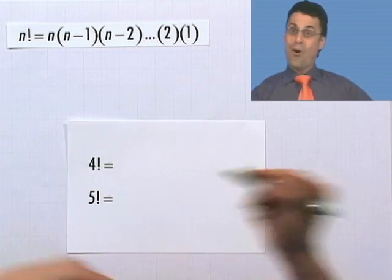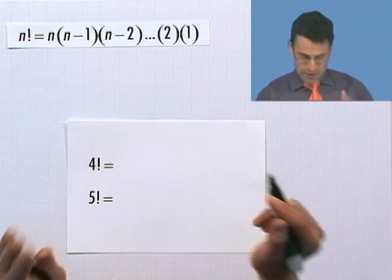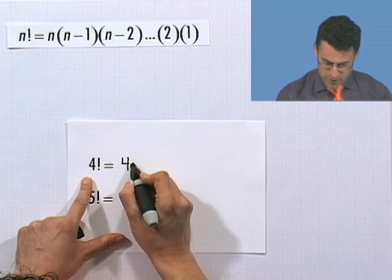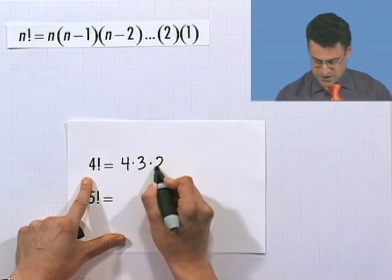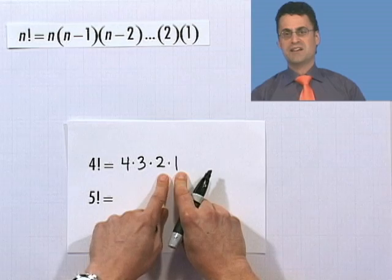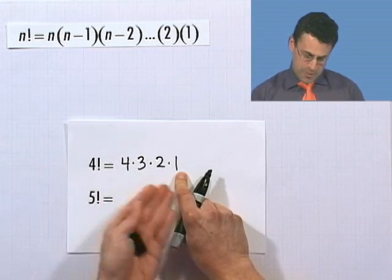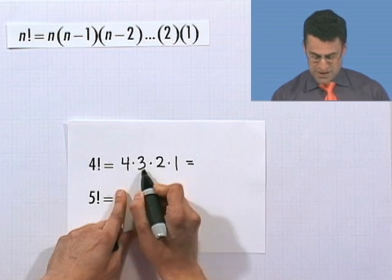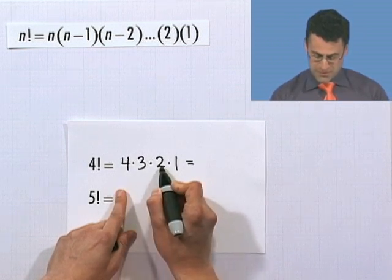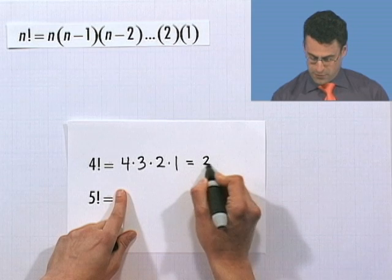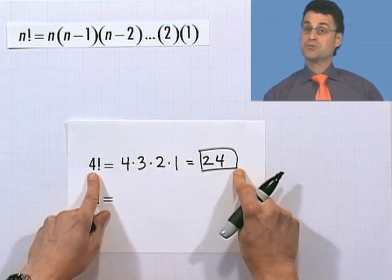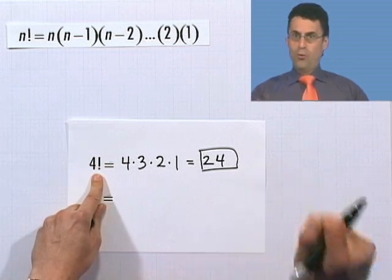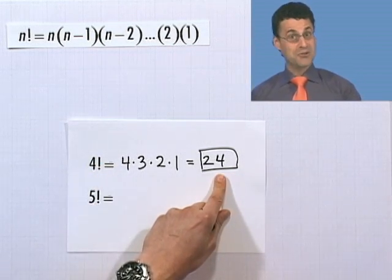When in life do you get to write down a whole bunch of numbers and multiply them? Well, in math. So 4 factorial is 4 times 3 times 2 times 1. You don't have to write the 1 in, because 1 times anything is that anything, but I like to write it as a reminder. 4 times 3 is 12, times 2 is 24, times 1 is 24. So 4 factorial equals 24. You can see why factorial has that exciting symbol — just with 4, we get a big number like 24.